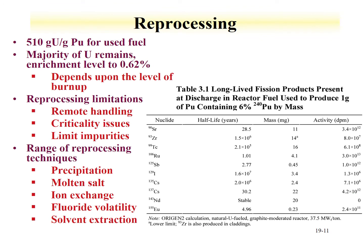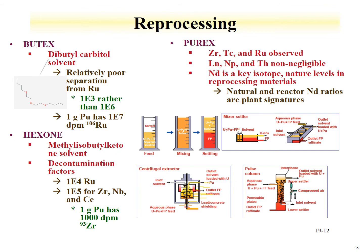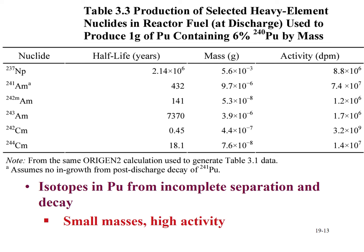Information on reprocessing techniques, routes, and methods can also be used for solvent extraction processes, similar to what was discussed about fission products. The transuranic isotopes can also be produced during the production of plutonium and provide signatures. As an example, if one produces one gram of plutonium that is 6% by mass plutonium-240, one can expect the isotopes of neptunium, americium, and curium to be present. Their relative masses can be listed per gram of plutonium produced.